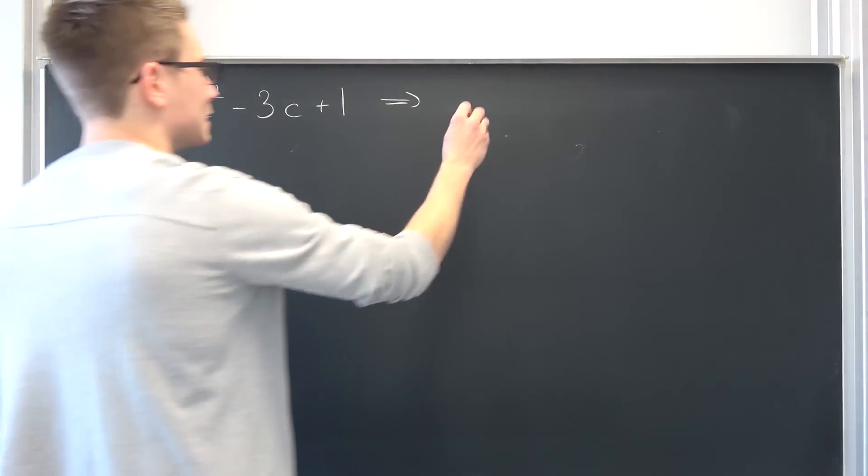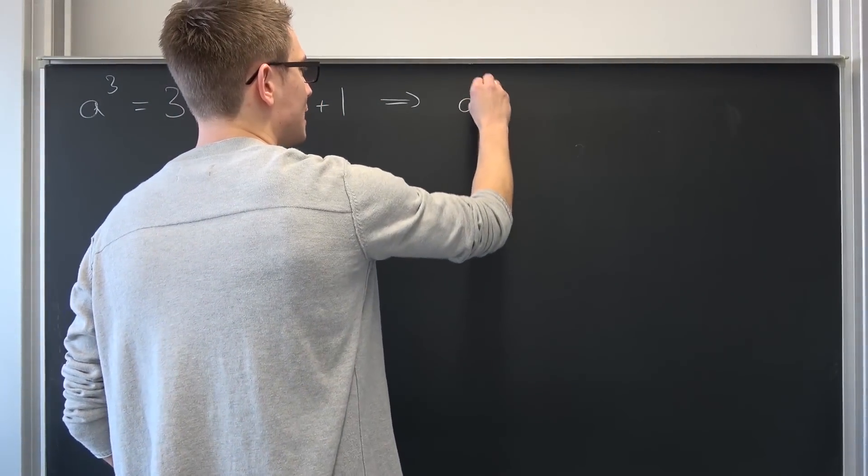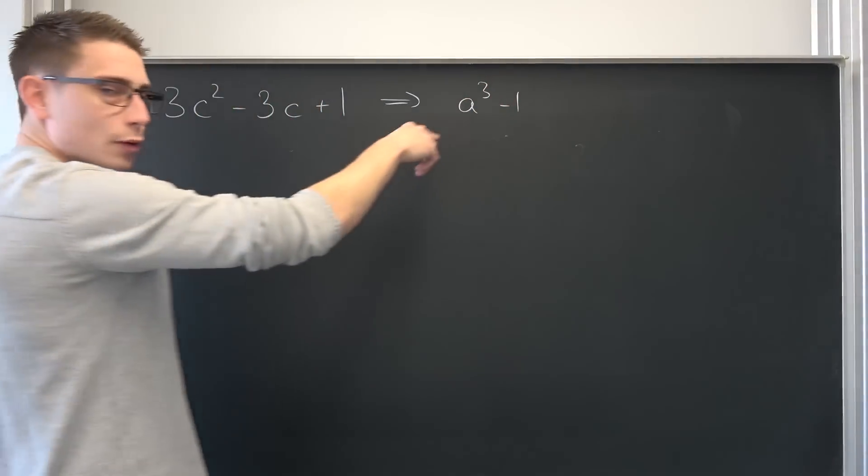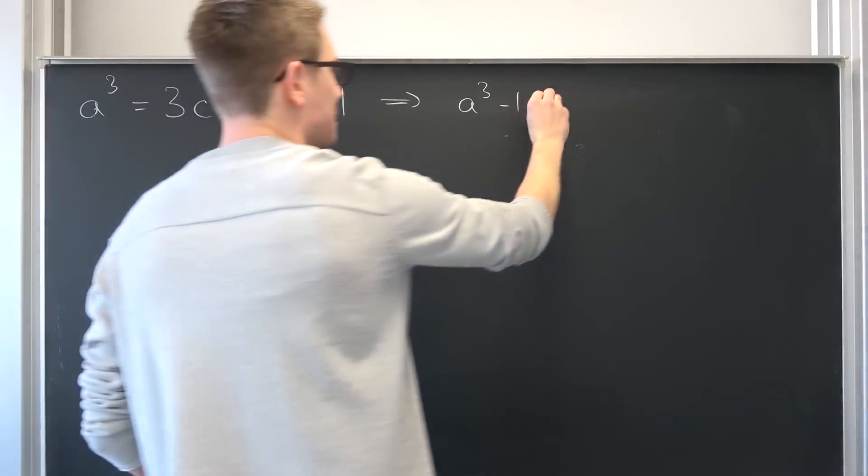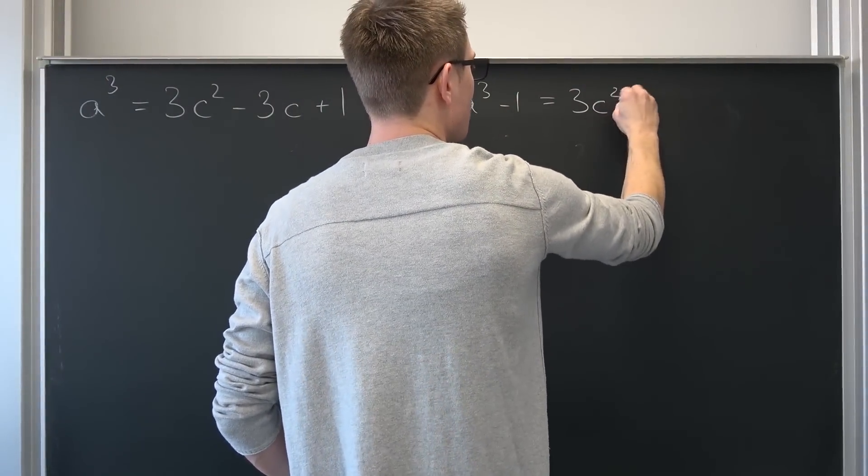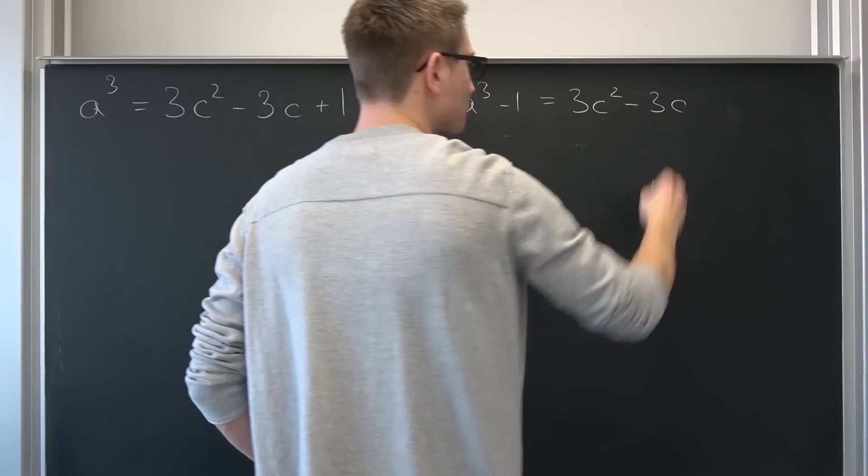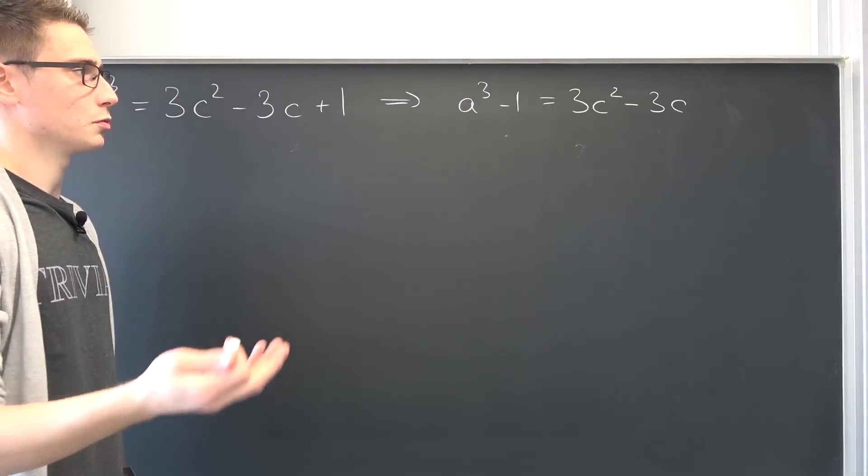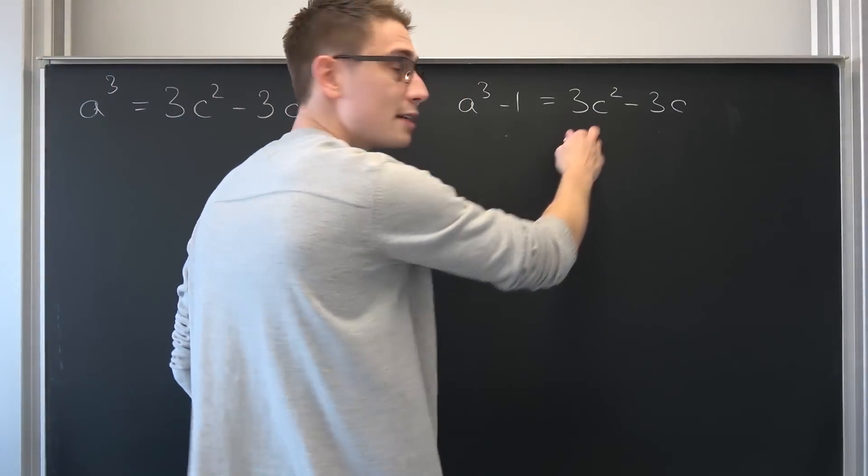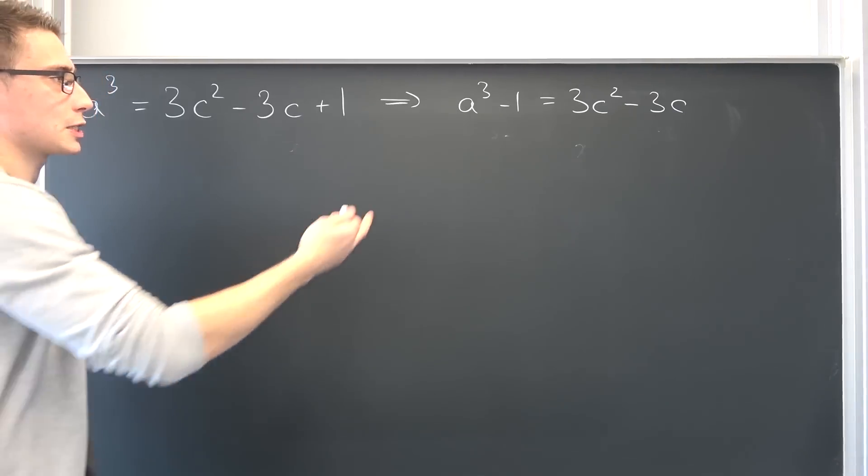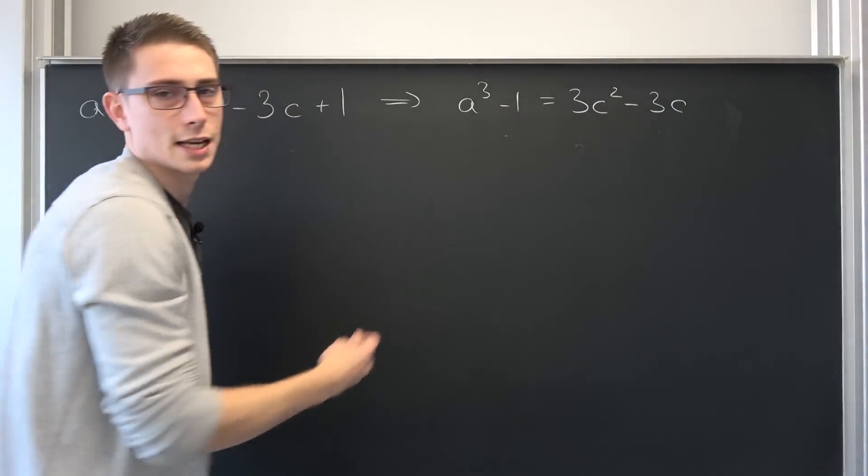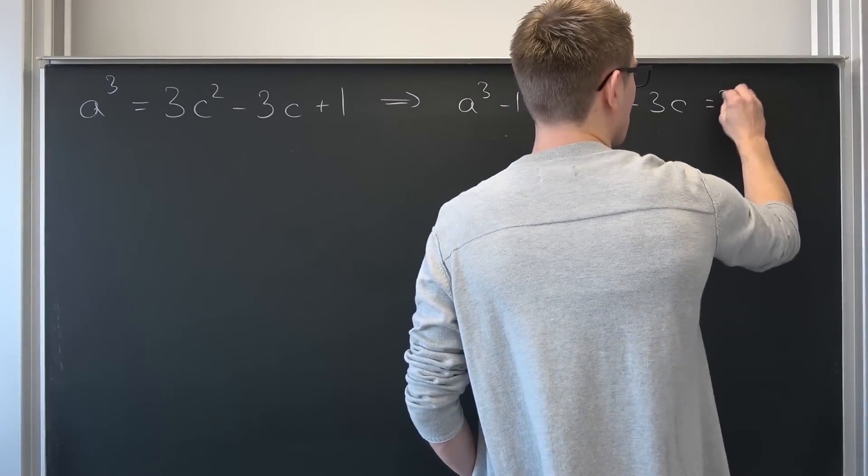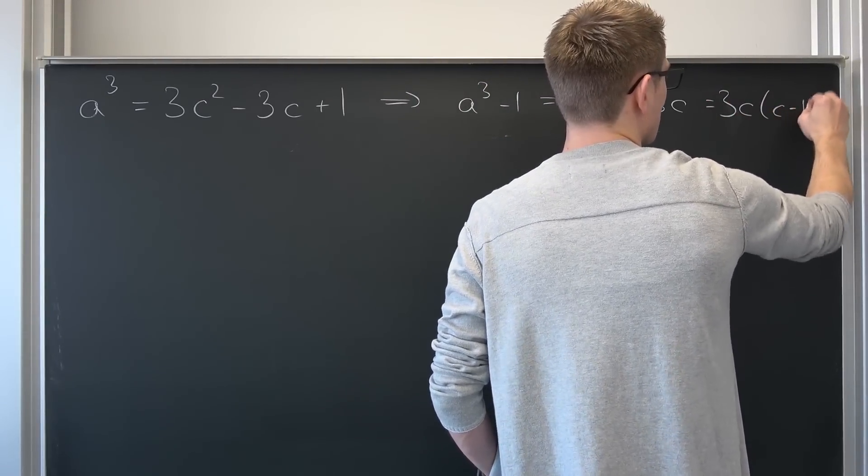Now, by subtracting this on both sides, we get a to the third power minus one. Maybe you can already see that this right here is quite powerful, is thus equal to three c squared minus three c. Also, what you could notice is that three c is a common factor. This is one of the reasons why I subtracted one, such that it's nicely separated. Meaning we are going to have three c times c minus one on this side.